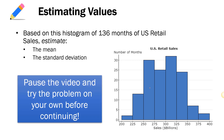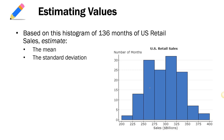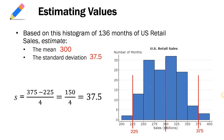Now pause the video and see if you can figure out the mean and standard deviation for this data — a histogram of 136 months of US retail sales. For the mean, right down the center, we get about 300, which is 300 billion. For the standard deviation, coming in just a little bit on either side, I made my cutoffs at 225 and 375, giving a standard deviation of 37.5.